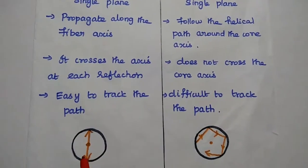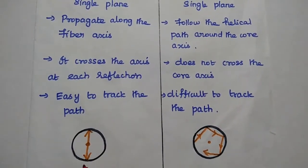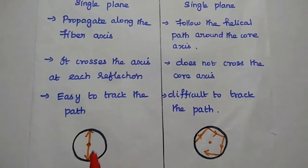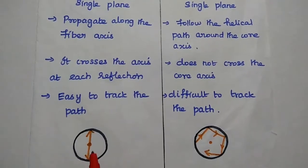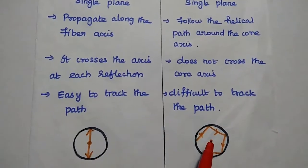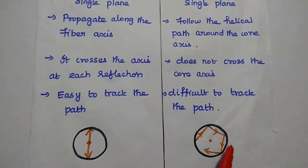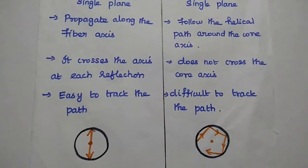Here is the front view of the fiber axis. The wave propagating in meridional rays travels in a single plane, while skew rays follow a helical path.